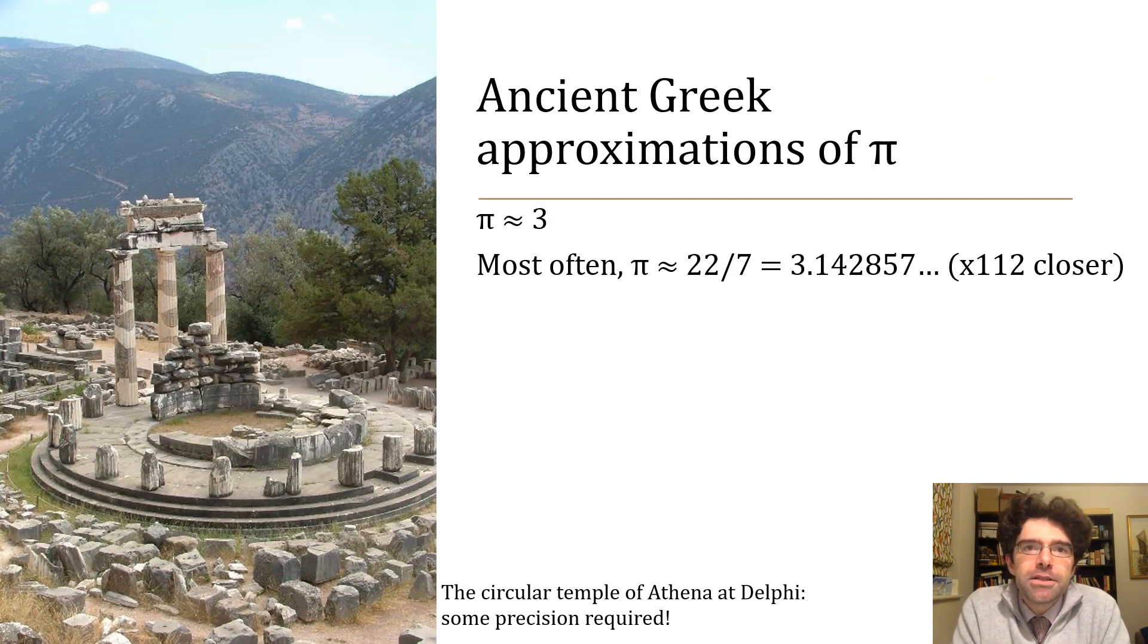Ancient Greeks sometimes took the circumference of a circle just to be three times the diameter, but if they had something quite complicated to do like building a circular temple like the picture, then that probably wouldn't work, your building wouldn't quite join up. So they were very familiar with the approximation 22 over 7, which as you can see starts well 3.14.